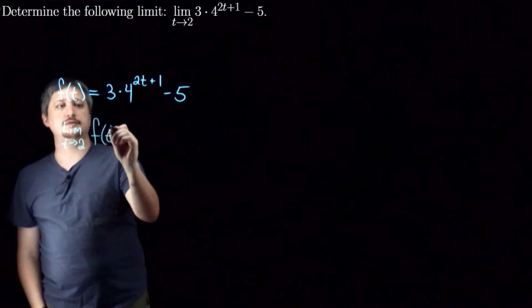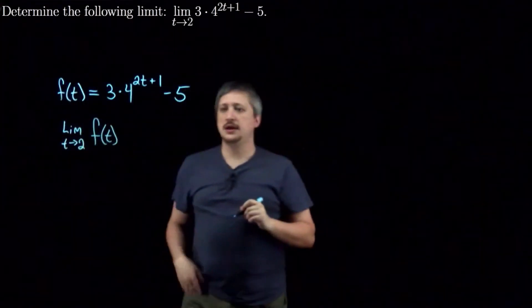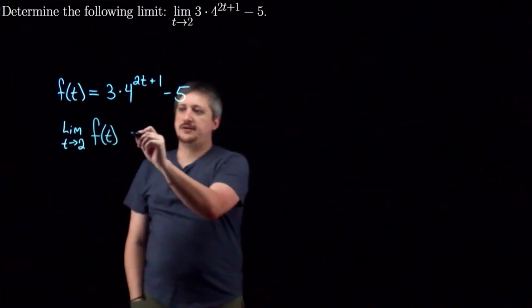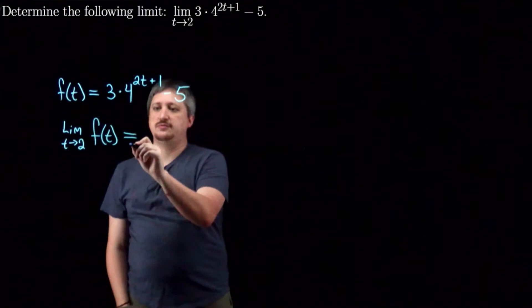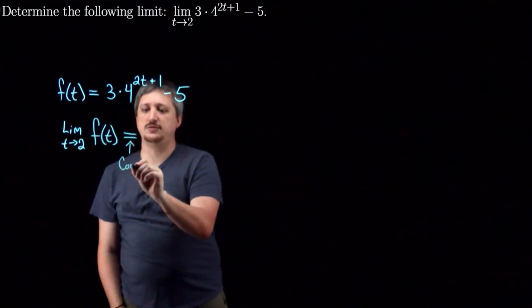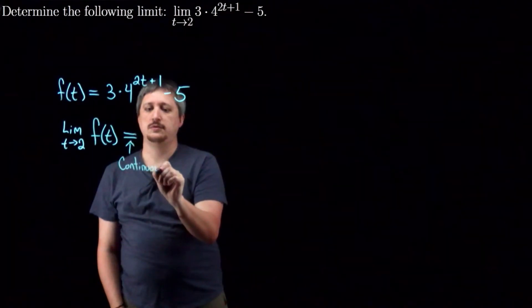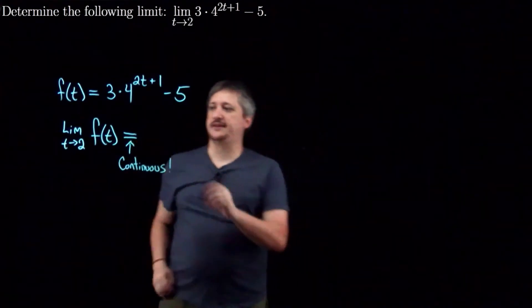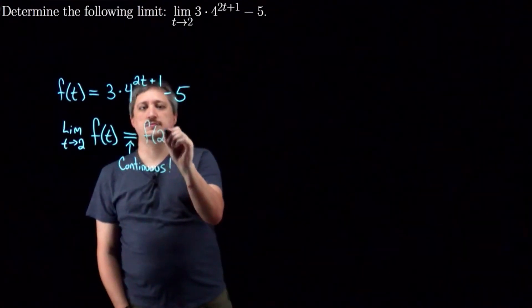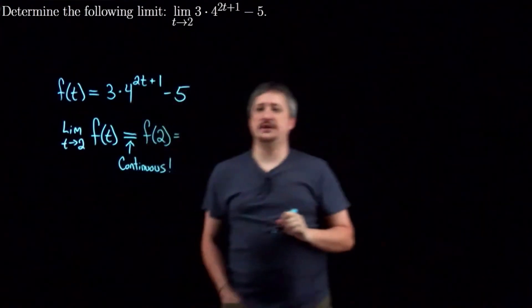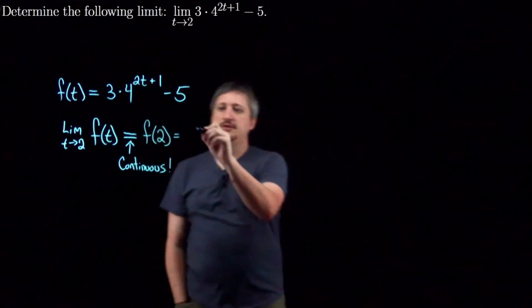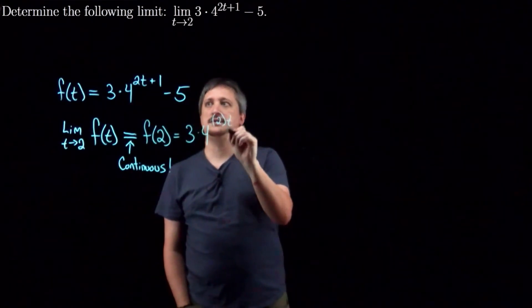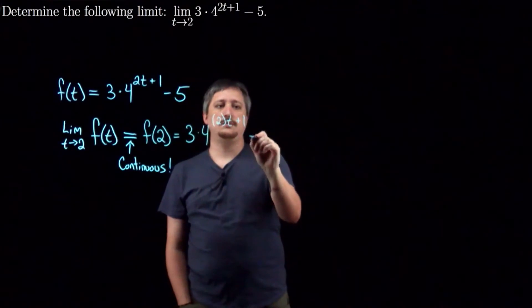f of t. So that's the same as this thing, which is what I overall want up here. But because this is continuous, which again, I'm going to write because this is continuous, that gives me that this thing is actually equal to the function at that point, f of 2, which means now I can just plug in 2 to my function. So I'm doing 3 times 4 to the 2t plus 1 minus 5.